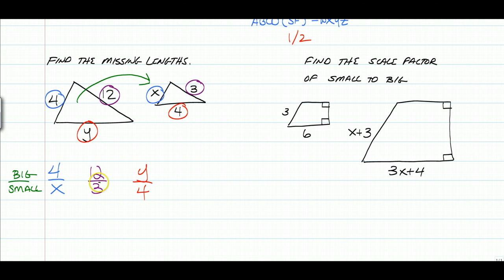So in this case, we could just set 12 over 3 equal to 4 over X. And we can set 12 over 3 equal to Y over 4. And this is why we talked about cross-multiplying first. To solve for X, you just cross-multiply. So we have 12X is equal to 12, which means X is equal to 1.